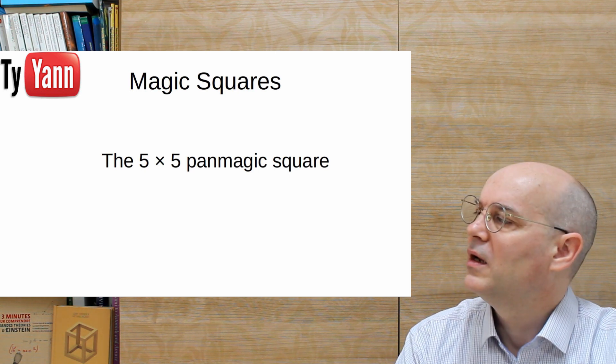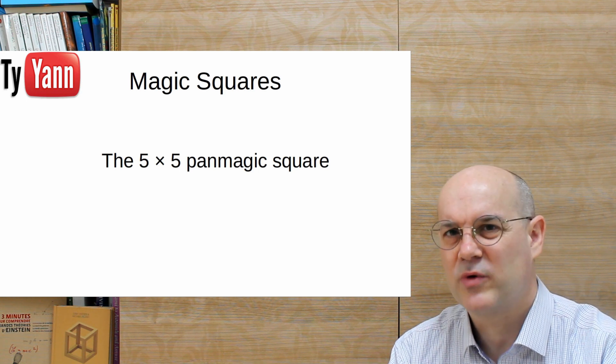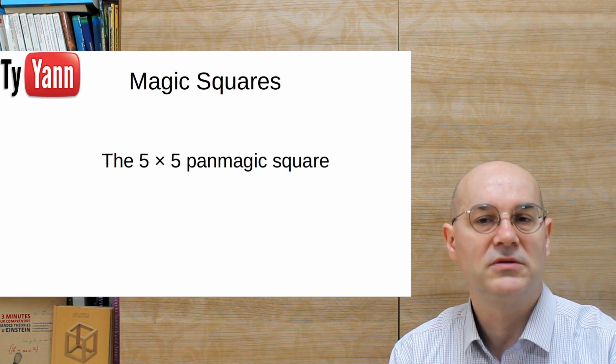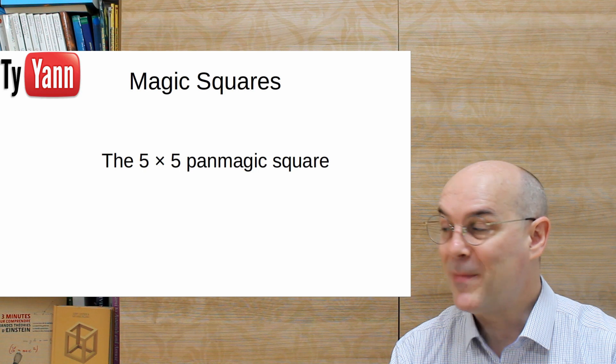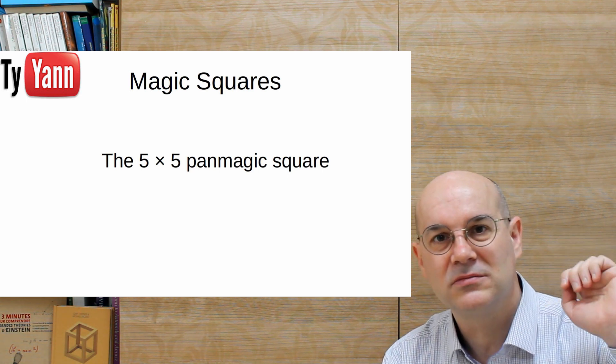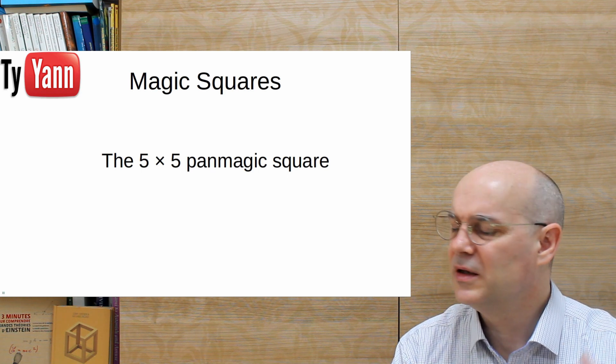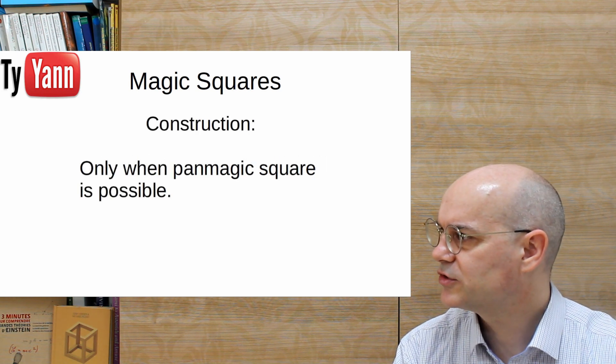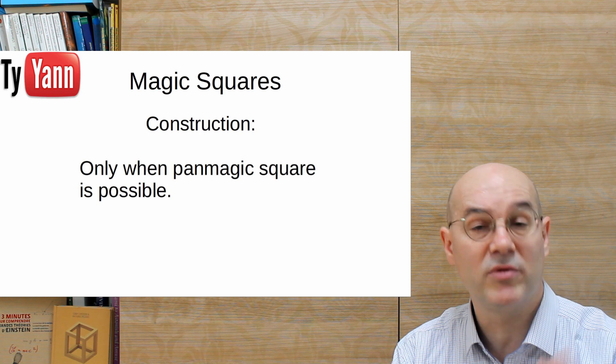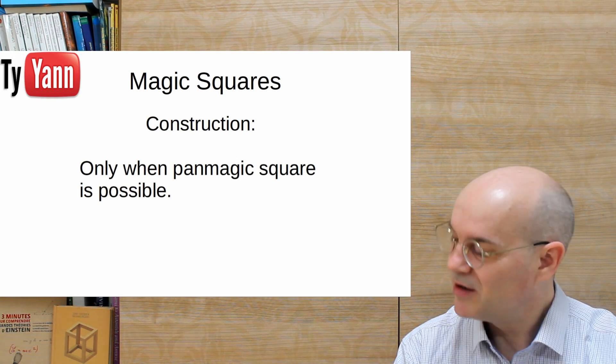What is a pan-magic square? Pan-magic square is a short version of pan-diagonal magic square, which means that you have a magic square, which means the rows, the columns, and the two diagonals add up to the magic constant. A pan-diagonal magic square means that also the other diagonals that you could get by wrapping around also add up to the magic constant.